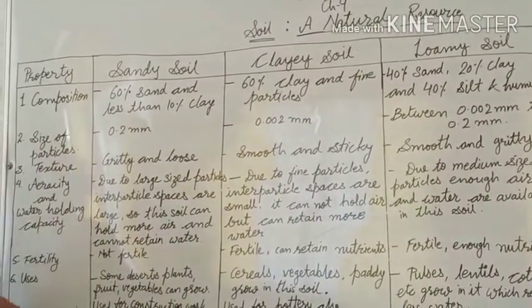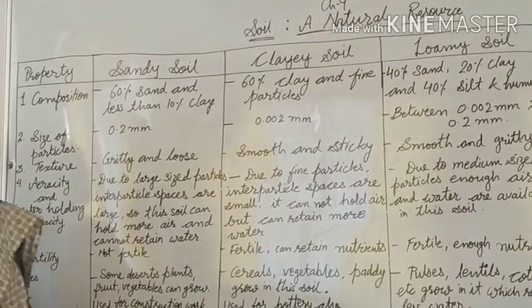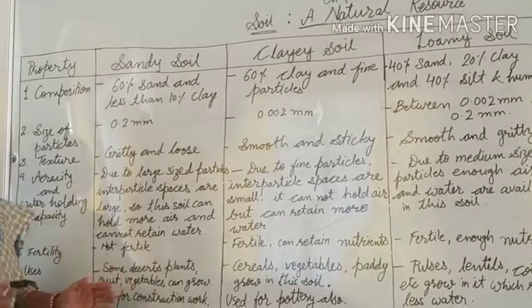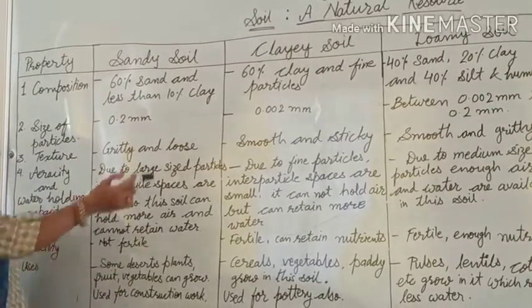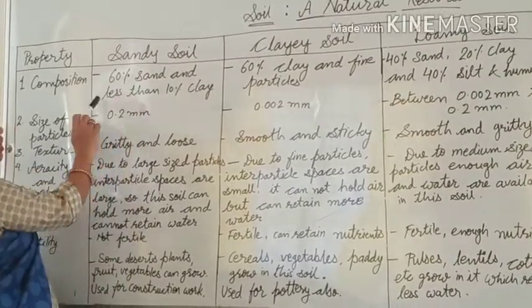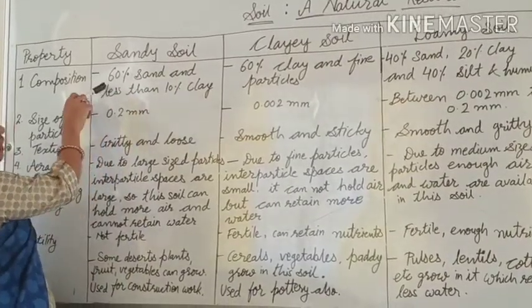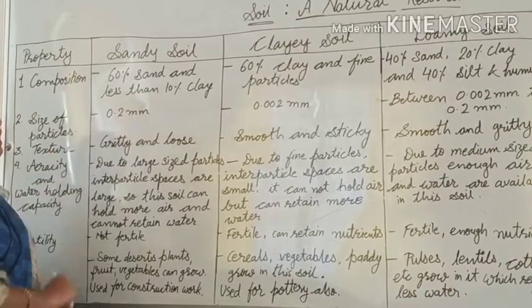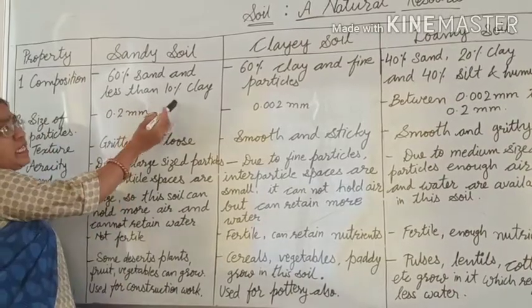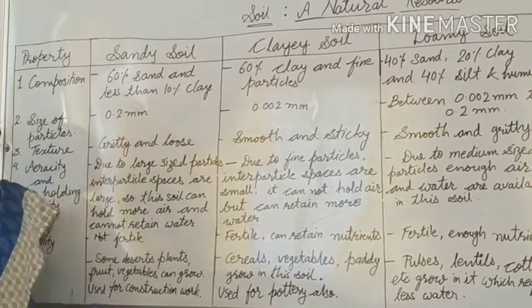The first property we will take is composition — what type of particles consist in these soils. Sandy soil consists of 60% sand and less than 10% clay.